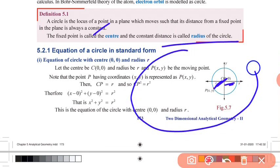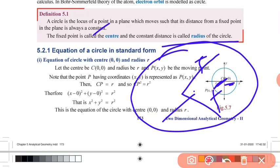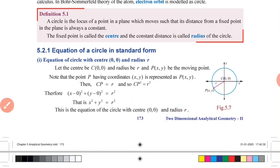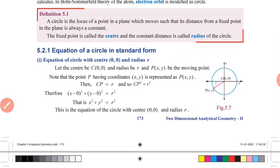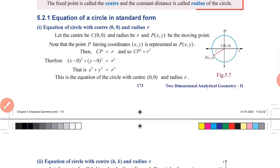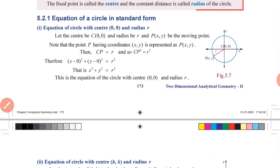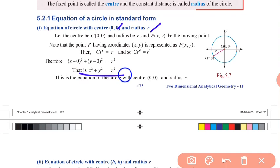For example, if we have a circle with radius 5 centimeters, that constant distance is always the same — it is always equal to 5. So the equation of the circle in standard form with center (0,0) and radius R is: x squared plus y squared equals R squared.